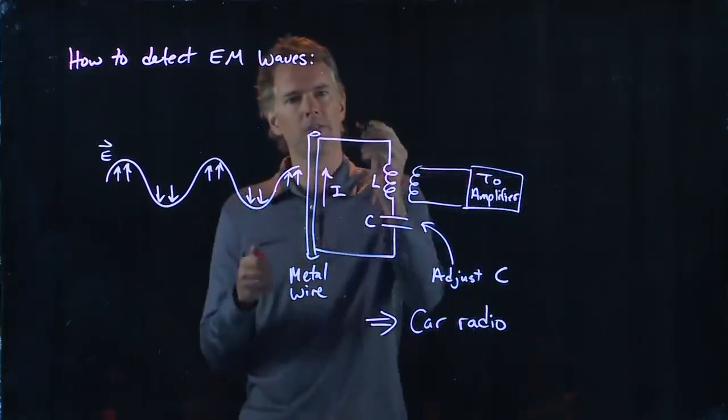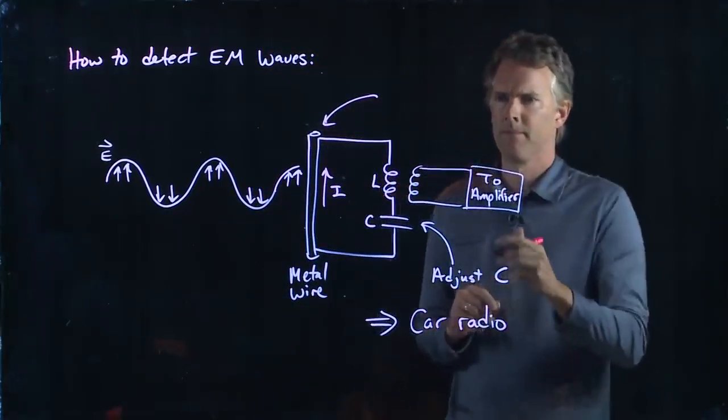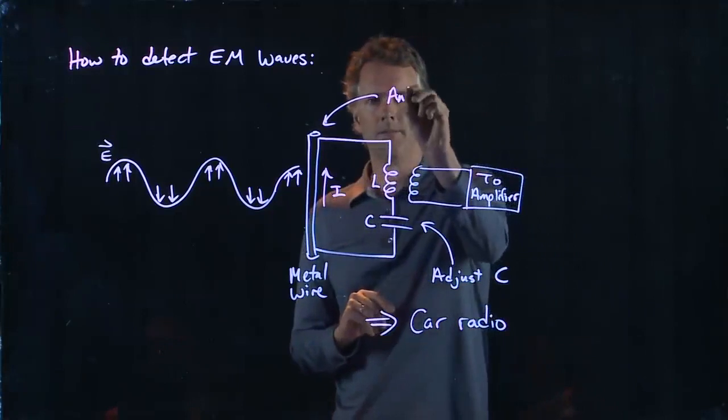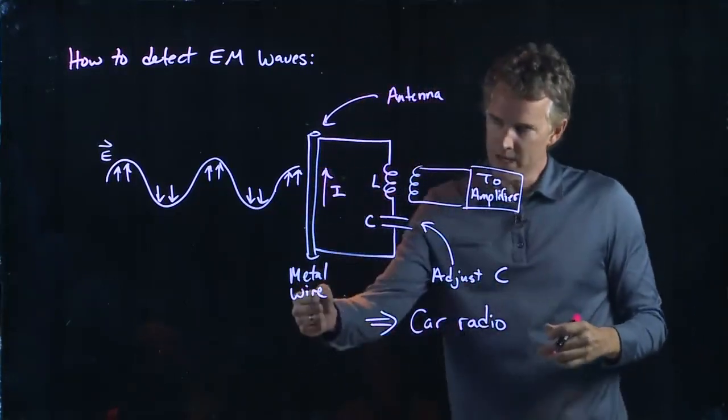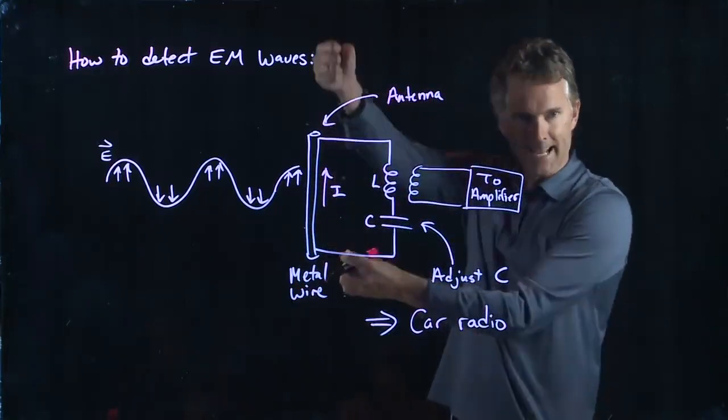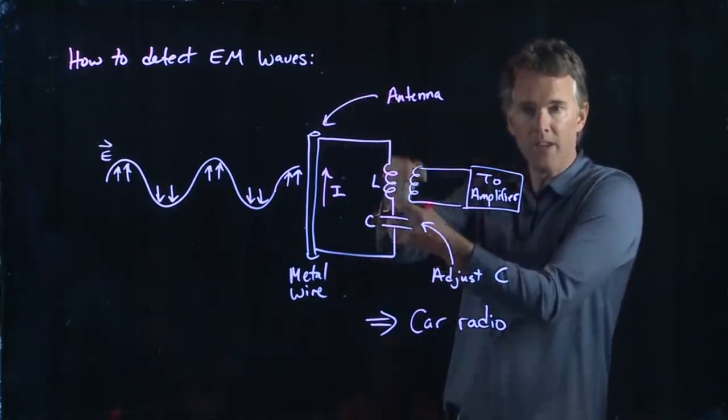What is this thing? What is this big metal wire? You go outside your car, you reach in, and you pull out this big telescoping wire. That's your antenna.